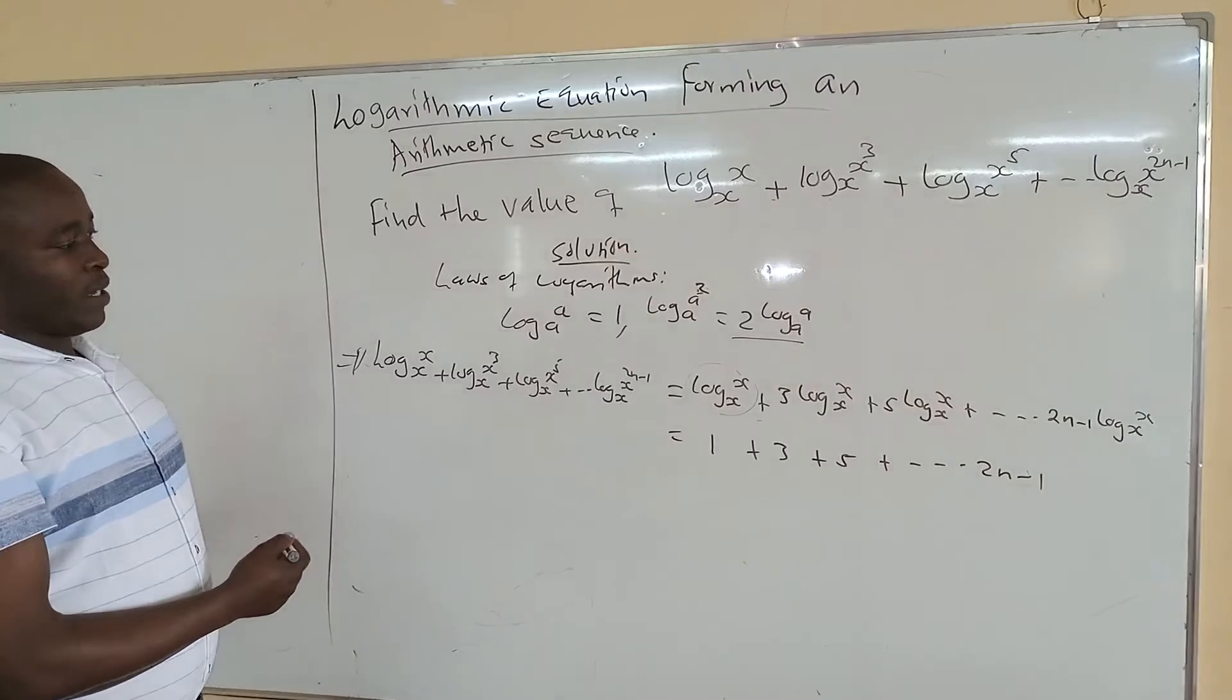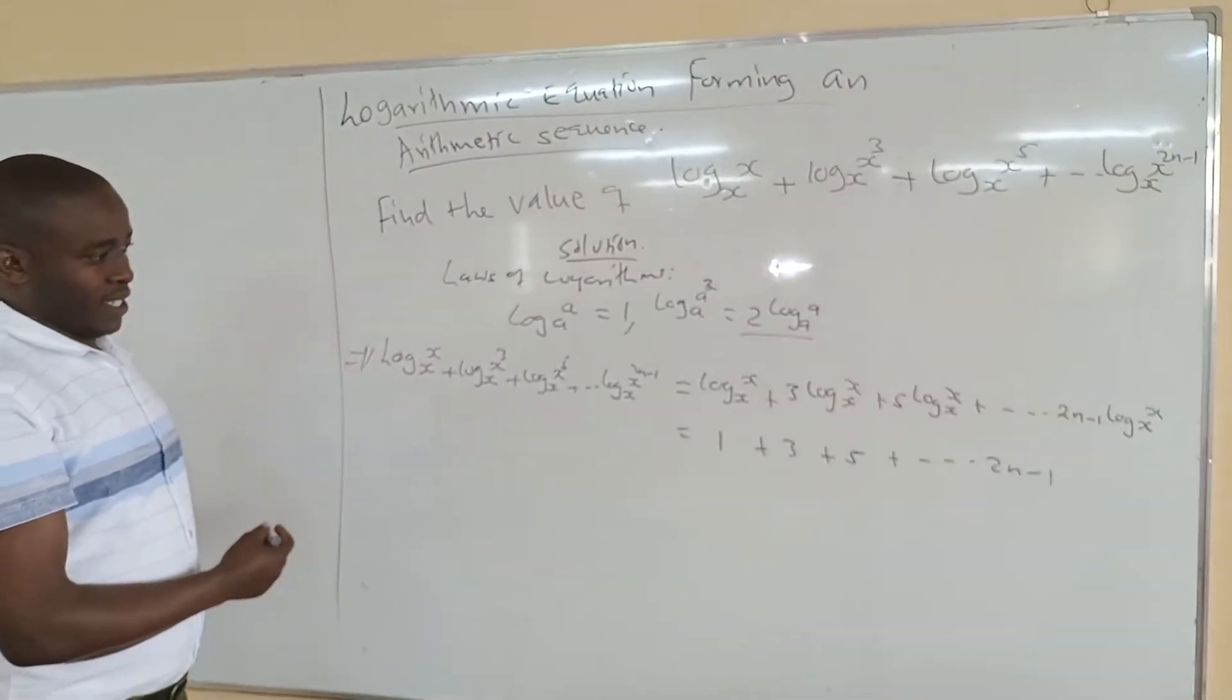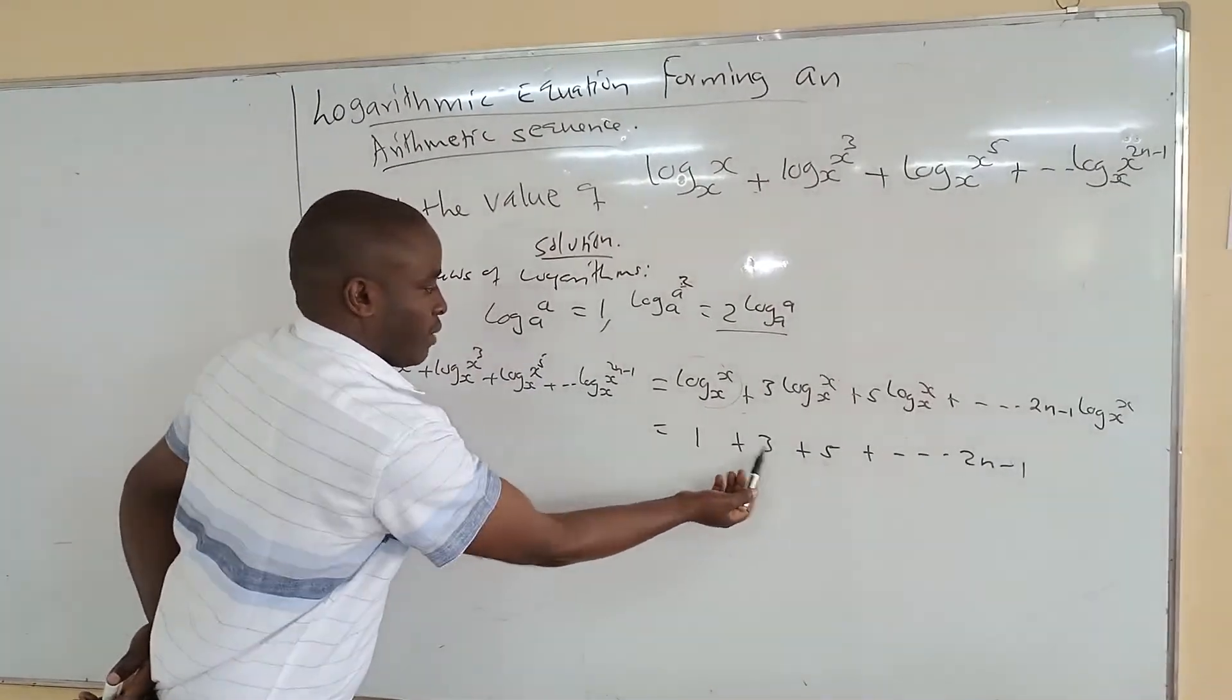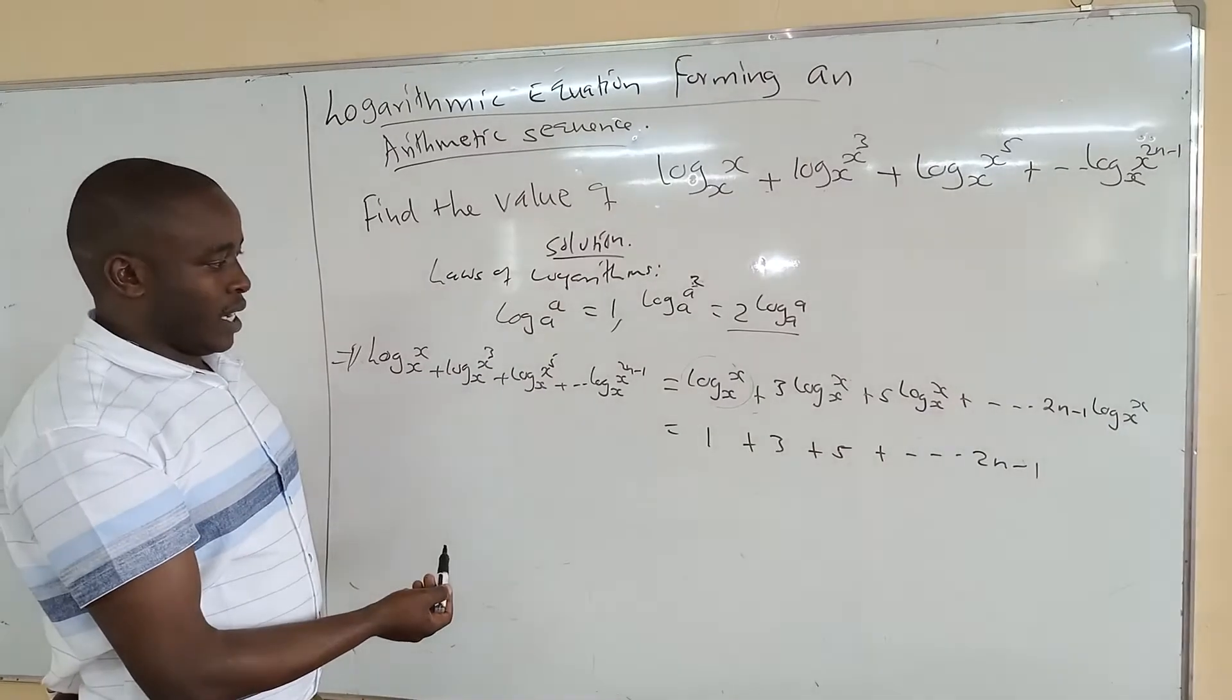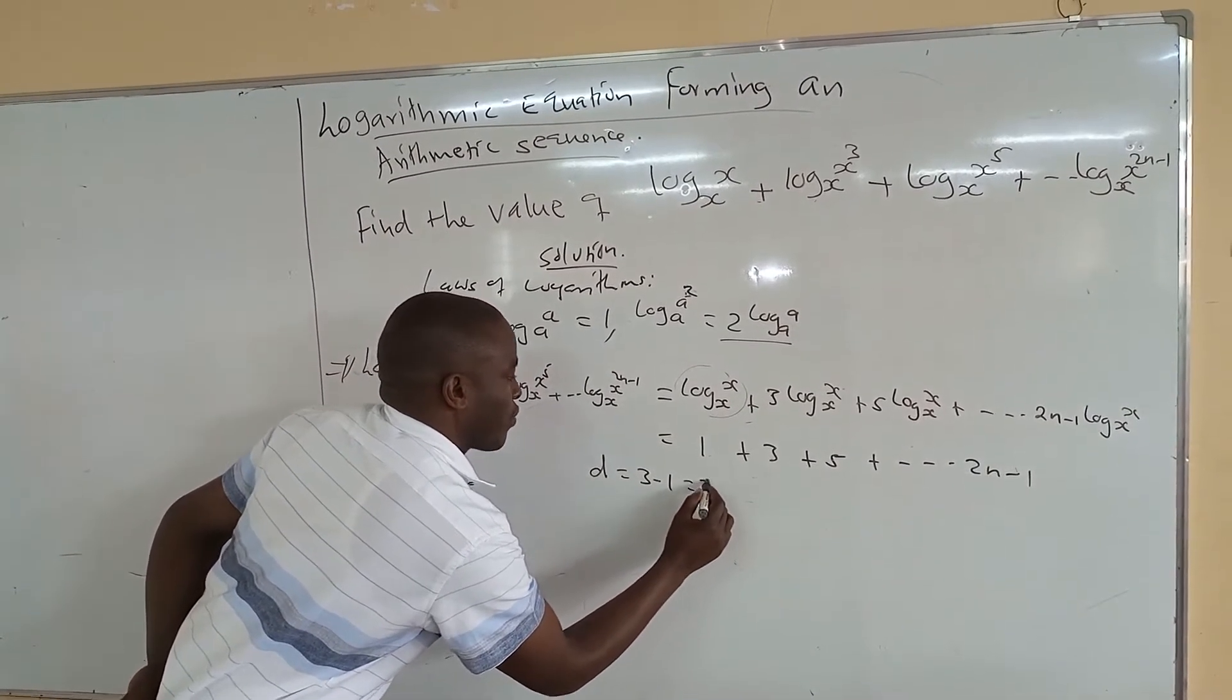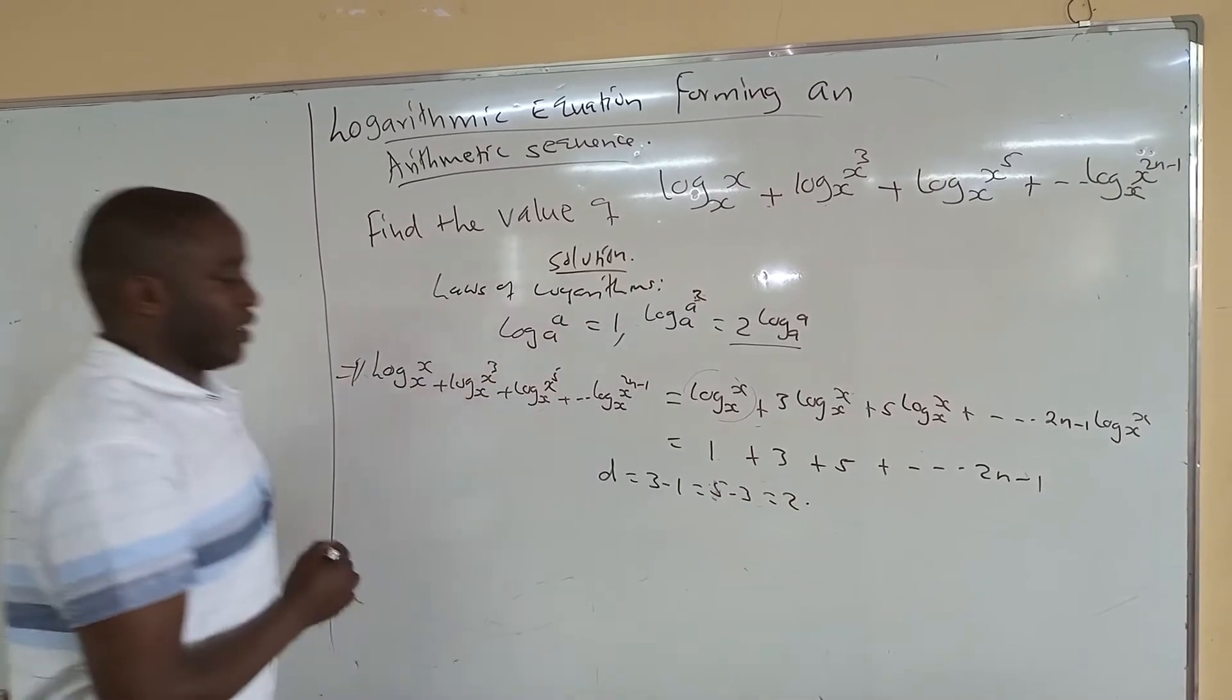This now forms an arithmetic sequence. So in this arithmetic sequence, we can find the difference. Because this minus this is 2, this minus this is 2, so there is a difference. That is d, d equals to 3 minus 1, which is equal to 5, which is 5 minus 3, which is equal to 2. So that is our difference.